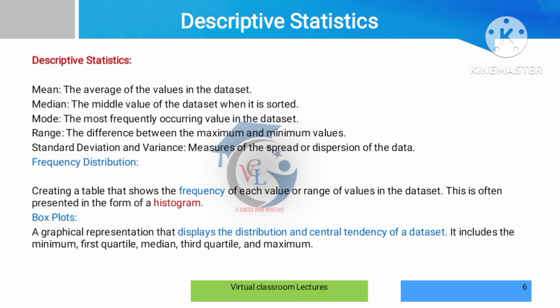Standard deviation and variance are measures of the spread or dispersion of the data. Standard deviation already has a mathematical formula. Frequency distributions, if you recall from mathematics, use tables with values and frequency, where the values depend on the frequency.